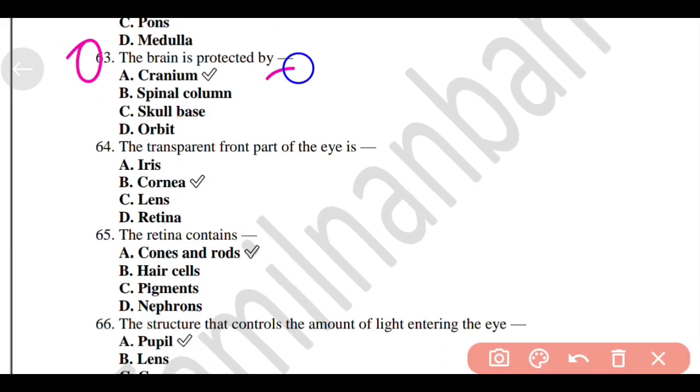The brain is protected by cranium. The transparent front part of the eye is cornea. The retina contains cones and rods.